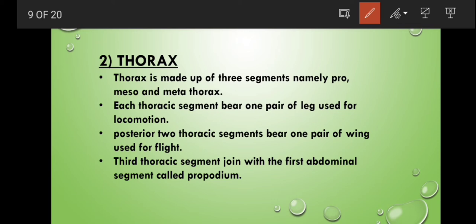Second region is thorax. Thorax is made up of three segments: prothorax, mesothorax, and metathorax. These thorax segments bear a pair of legs which are used for locomotion. And mesothorax bears a pair of wings which are used for flight. The third thorax segment joins with the first abdominal segment that is called propodeum.